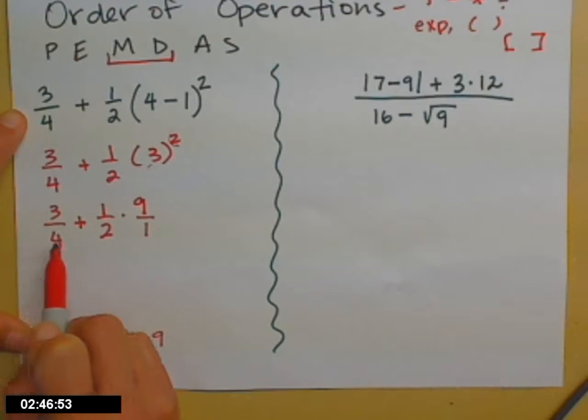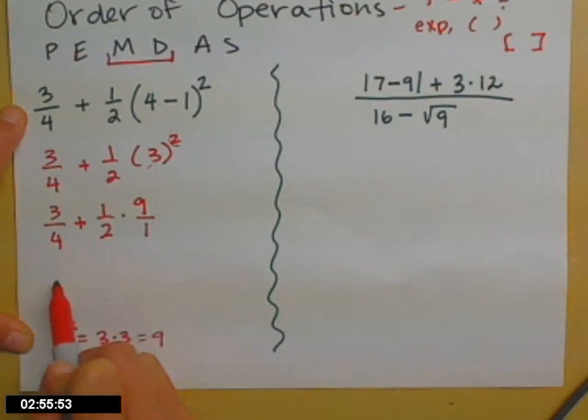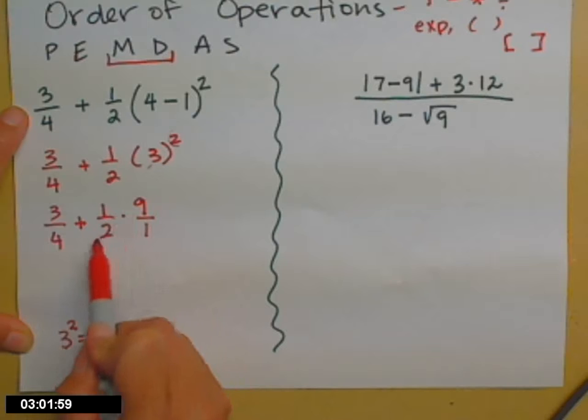So I'm looking for a multiplication or a division. And so you might say, hey, but 3/4, that's a division. Well, you're right, and if you were going to parentheses or to decimals, you could do that now and change that to a 0.75. But we're not going to deal with it that way. We're instead going to look at this multiplication problem right there, 1/2 times 9.